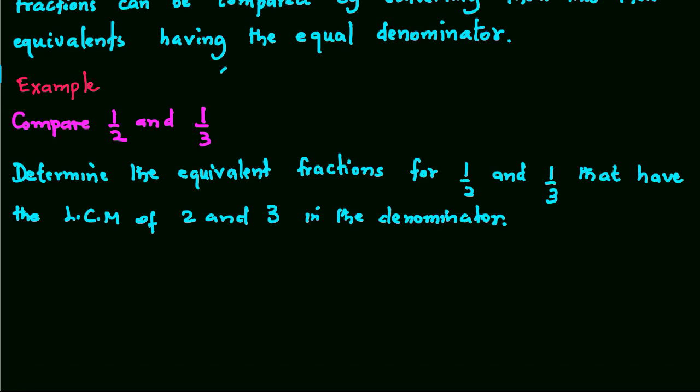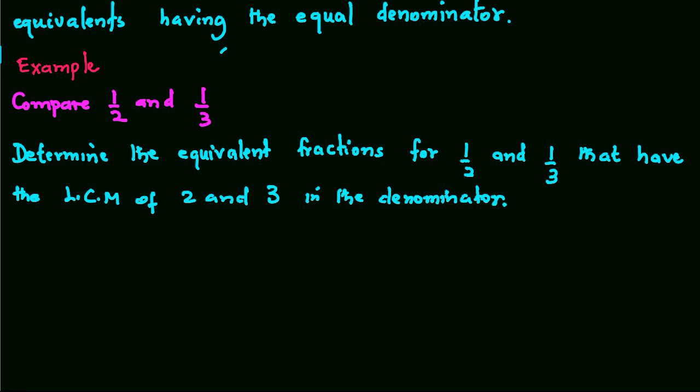Now, to achieve this, we need to multiply both the numerator and the denominator of a half and a third by a factor that would let us obtain 6 in the denominator.